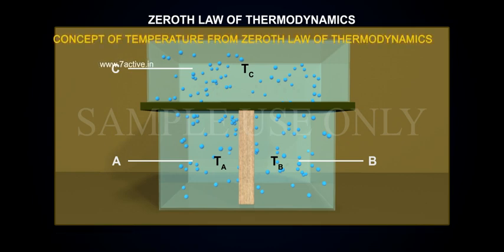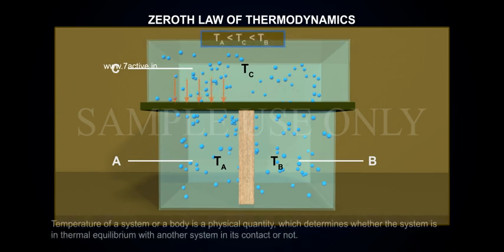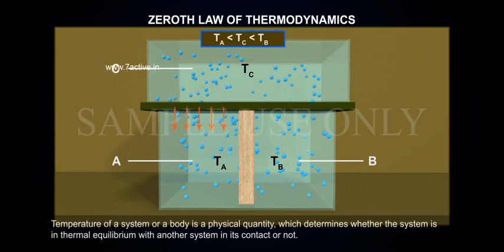Concept of temperature from zeroth law of thermodynamics. Temperature of a system or a body is a physical quantity which determines whether the system is in thermal equilibrium with another system in its contact or not.